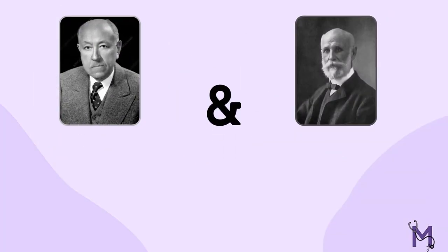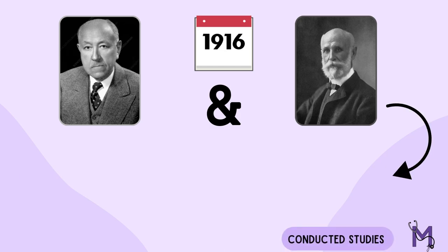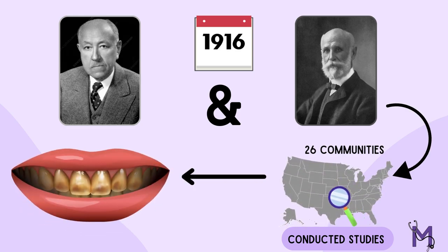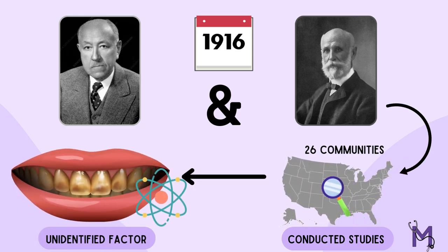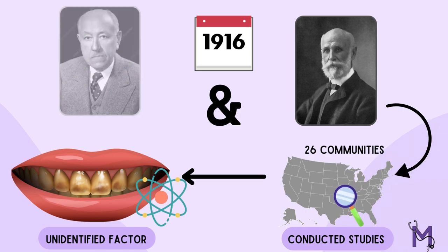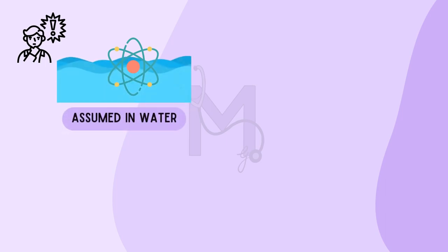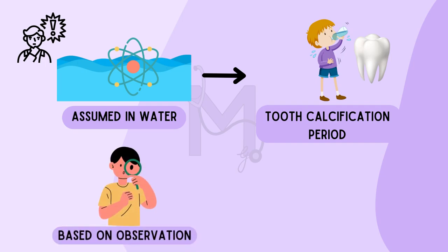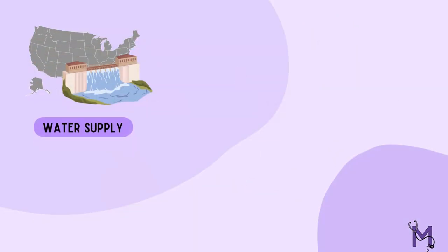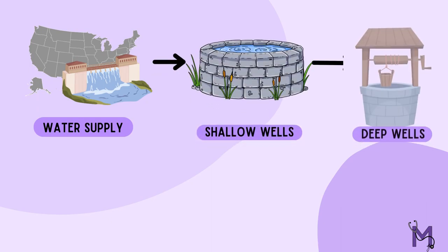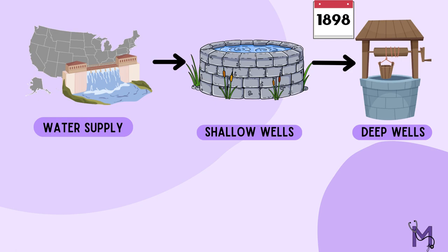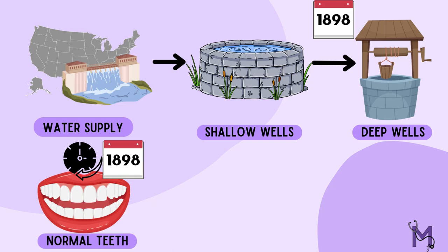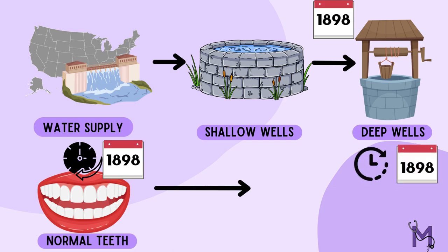McKay, along with G.V. Black in 1916, conducted studies on individuals living in 26 different communities in the USA and concluded that there is the presence of an unidentified factor responsible for the mottling of the enamel. They assumed that the factor might be present in the water consumed during the tooth calcification period. This assumption was based on observations of residents of Britain, where the water supply changed from shallow wells to deep wells after 1898. People born before 1898 had normal-appearing teeth, while people born after 1898 had enamel mottling.